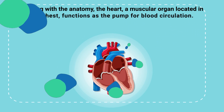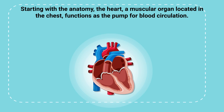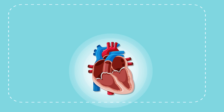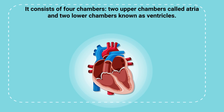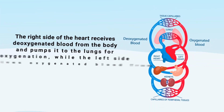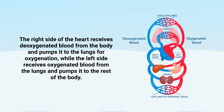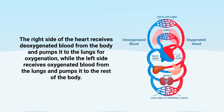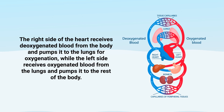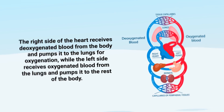Starting with the anatomy, the heart is a muscular organ located in the chest that functions as the pump for blood circulation. It consists of four chambers: two upper chambers called atria and two lower chambers known as ventricles. The right side of the heart receives deoxygenated blood from the body and pumps it to the lungs for oxygenation, while the left side receives oxygenated blood from the lungs and pumps it to the rest of the body.